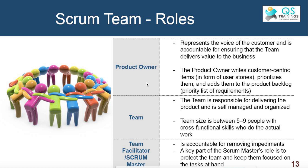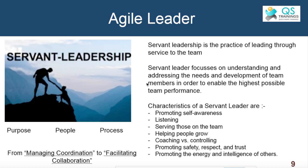What do we mean by servant leader? In a traditional project, the leadership style exhibited is command and control — the project manager tells the team what needs to be done. In an agile project, the scrum master as a servant leader facilitates conversations in the team. A servant leader is more worried about the team members than about himself. Unfortunately, in the corporate world there are very few examples of servant leader.